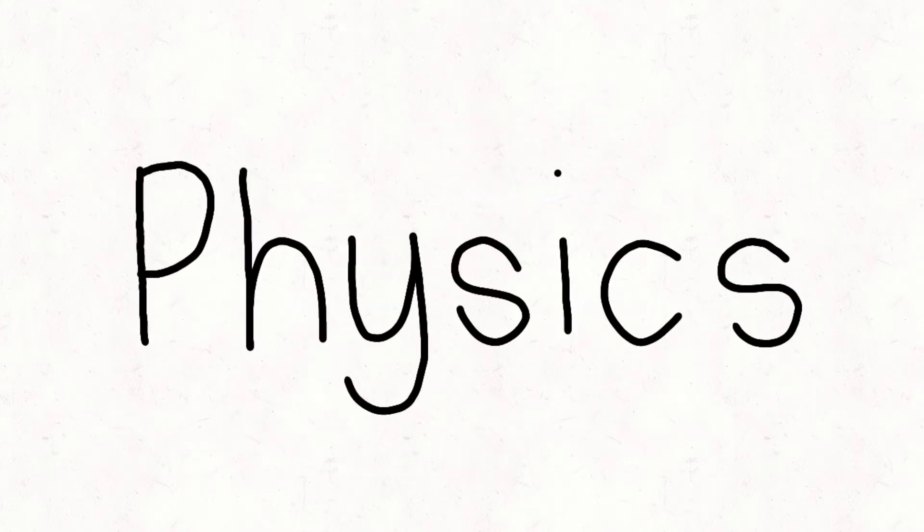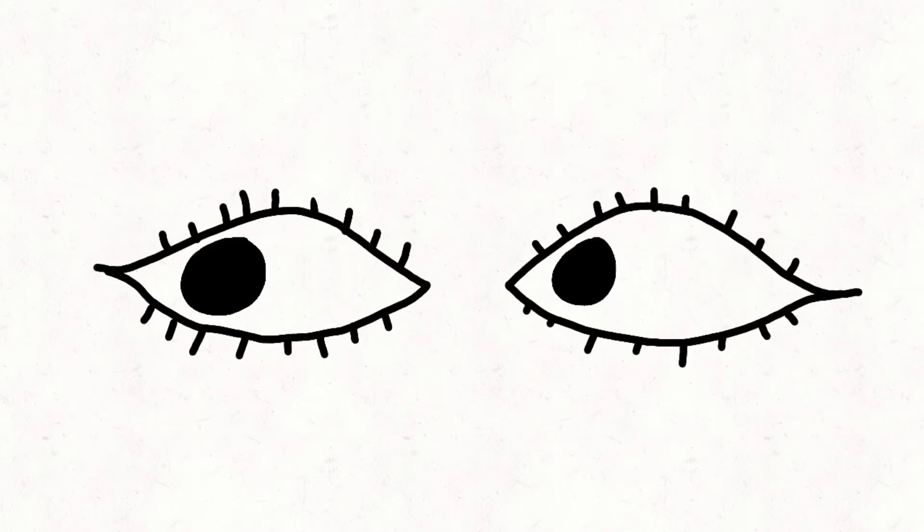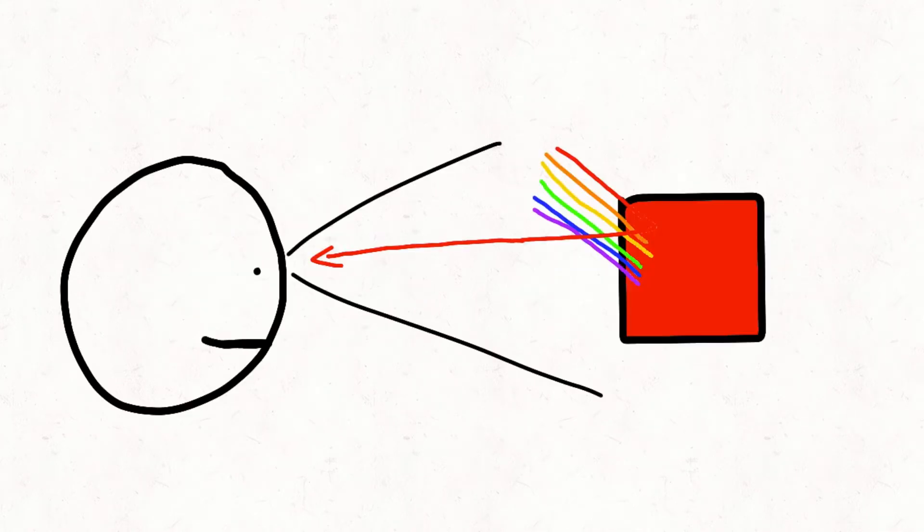The most practical way science has disproved the existence of ghosts is the physics way. The reason why we see things around us is, aside from the fact that we have sense of sight, is because objects absorb and reflect light which creates the image we perceive.